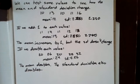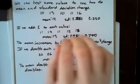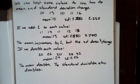If we add 1 to each value, the mean becomes 13 and the standard deviation becomes 2.280. It stays the same. So if we add or subtract some number from each of the values, the mean will shift by that much, while the standard deviation remains the same. The mean increased by 1, but the standard deviation doesn't change.